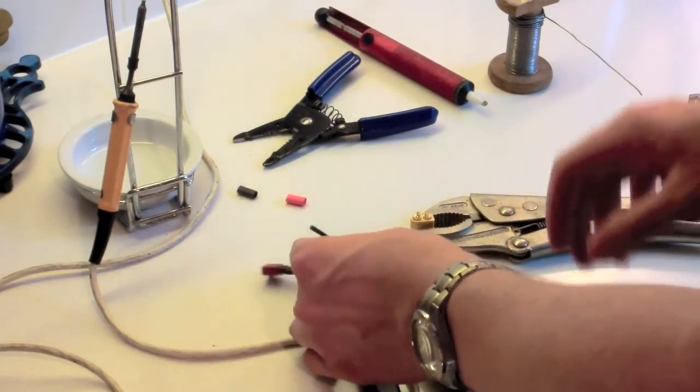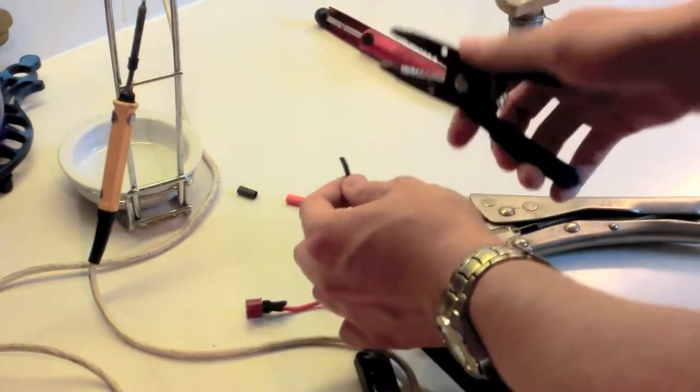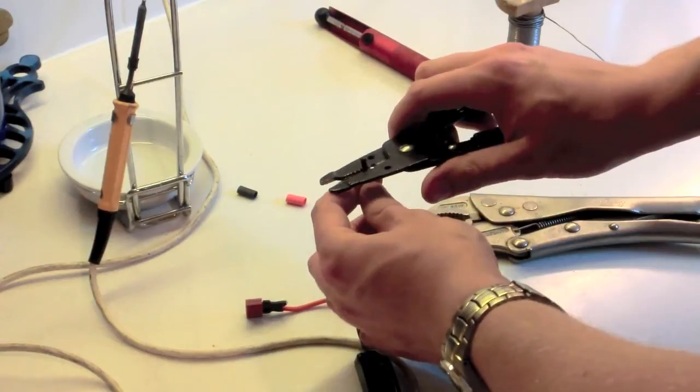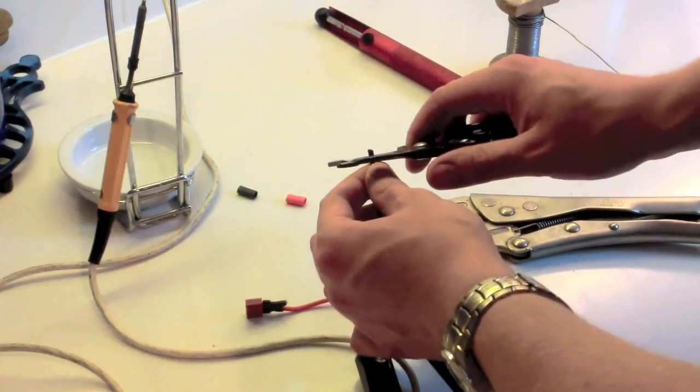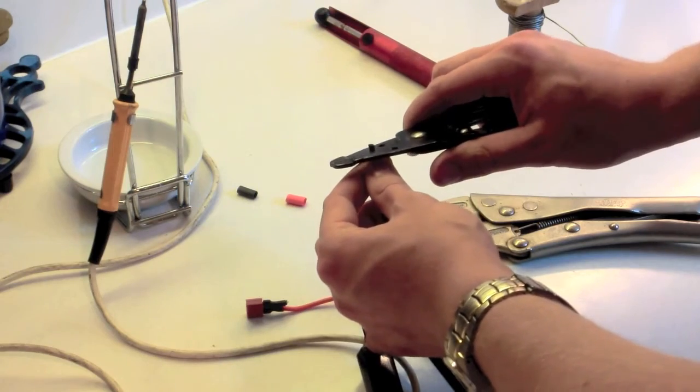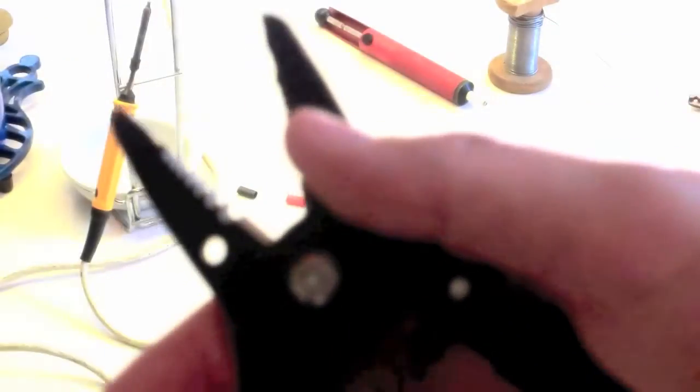Right then, like I say, ensure you only do one side at a time. Now you want to strip off a short section of wire. You only really want enough to be able to solder it. So I would recommend not really going, let's see if we can get that to focus, not really doing more than about that, that kind of a length. So maybe five or six millimeters.